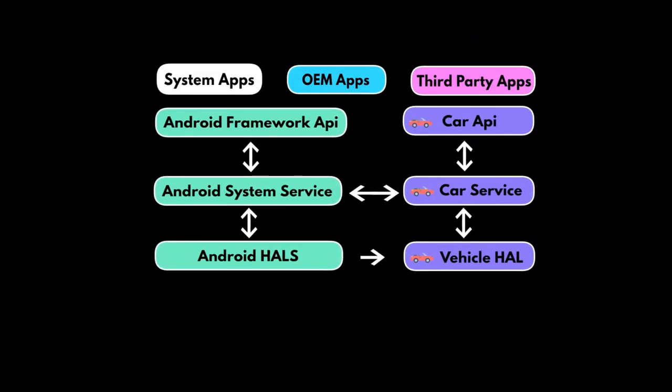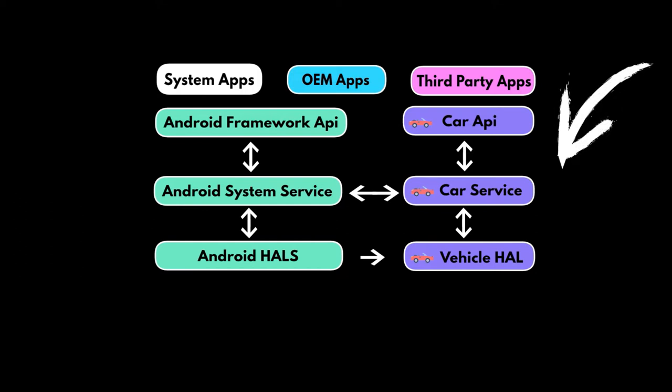In this diagram, we can see how the automotive modules are developed in comparison to the Android architecture. On the left side we have the Android modules, and on the right side we have the automotive-specific modules. These modules are created specifically for automotive. Many of the automotive modules are an extension to the standard Android modules. For example, the system UI is extended from the mobile version of system UI, and the automotive audio module is built on top of the core Android audio stack.